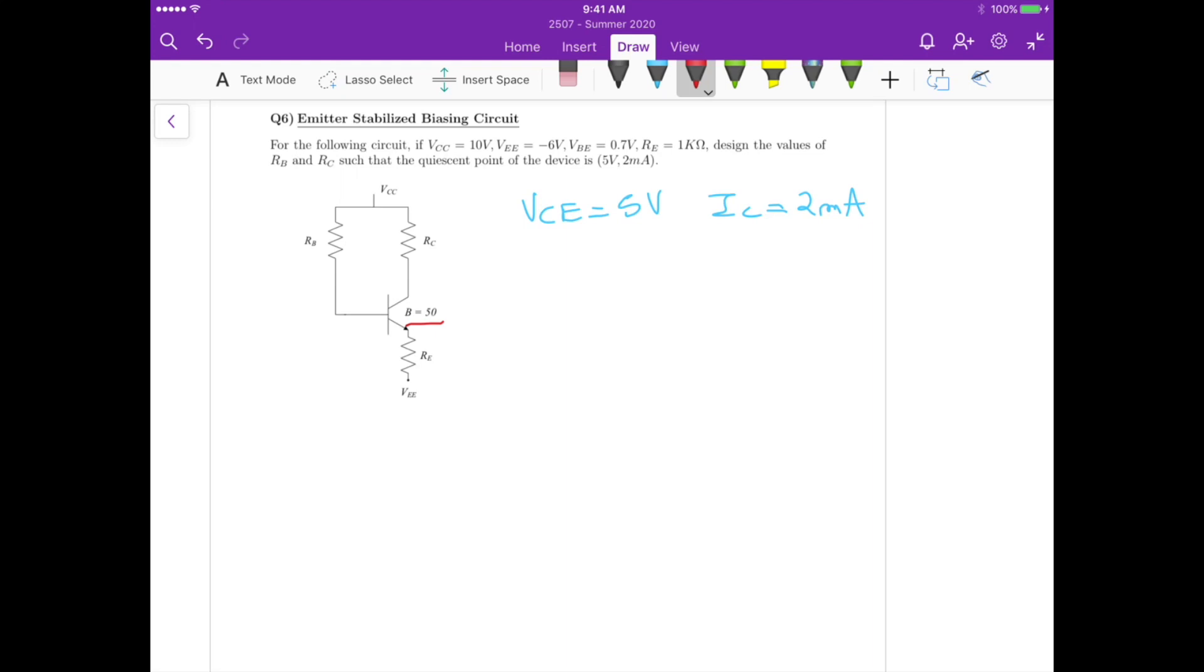So if we know IC should be 2 milliampere, we can calculate the emitter current and the base current using beta, or alpha. So in this case, the emitter current, which is equals to the collector current divided by alpha, and remember that alpha is equals to beta divided by beta plus 1. So if we substitute those values here, we get that the emitter current is 2.04 milliampere.